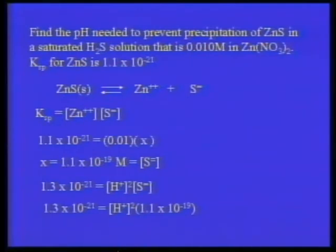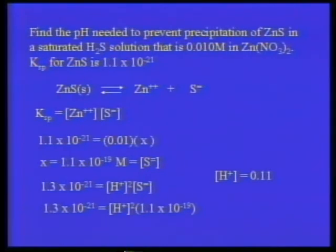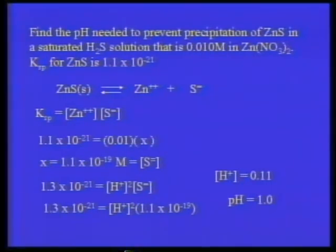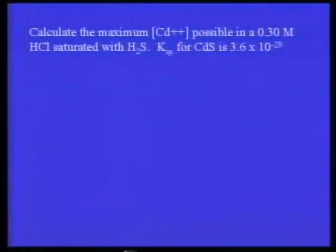Using the saturated H₂S expression: 1.3×10⁻²¹ = [H⁺]² × (1.1×10⁻¹⁹), so [H⁺] = 0.11 molar, and the pH equals 1. We must have this pH before saturating with hydrogen sulfide, and then zinc sulfide will not precipitate out of solution.